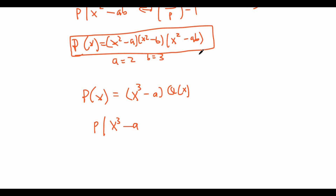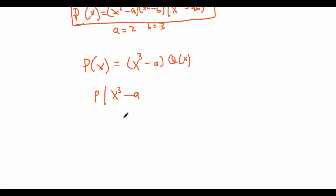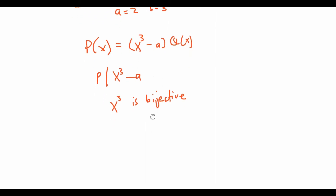So we might attack this problem in a slightly different way. Instead of checking whether a is a cubic residue mod p, let's try to prove that x³ is bijective over mod p. In other words, if we plug in two different numbers mod p into x³, we get two different numbers. If this is true, then clearly every a is a cubic residue mod p, so we can find an x such that p divides x³ − a.